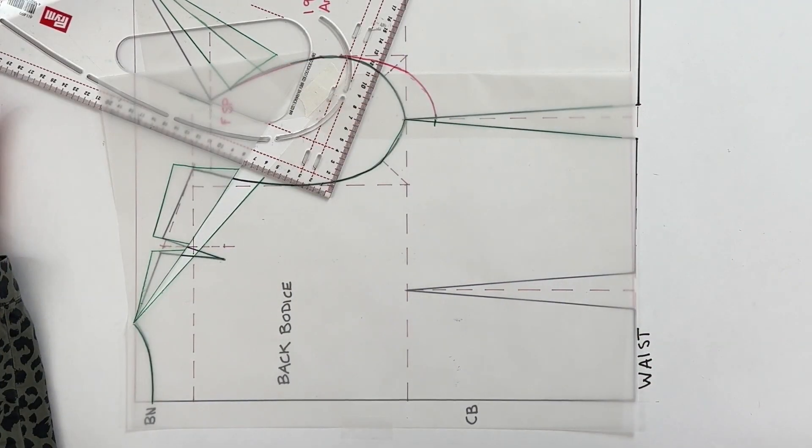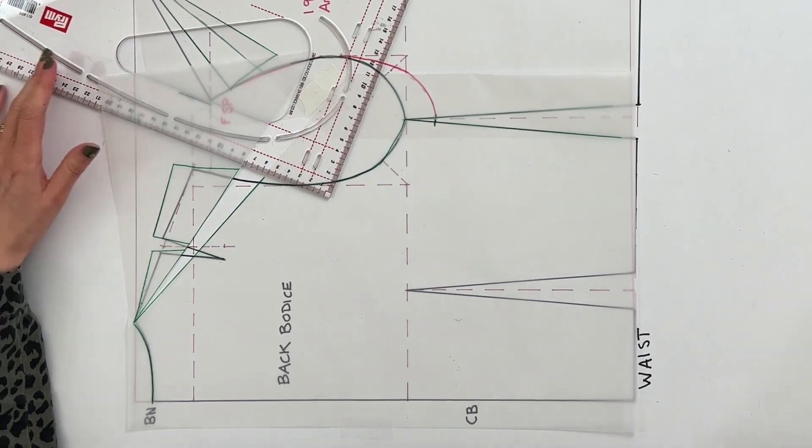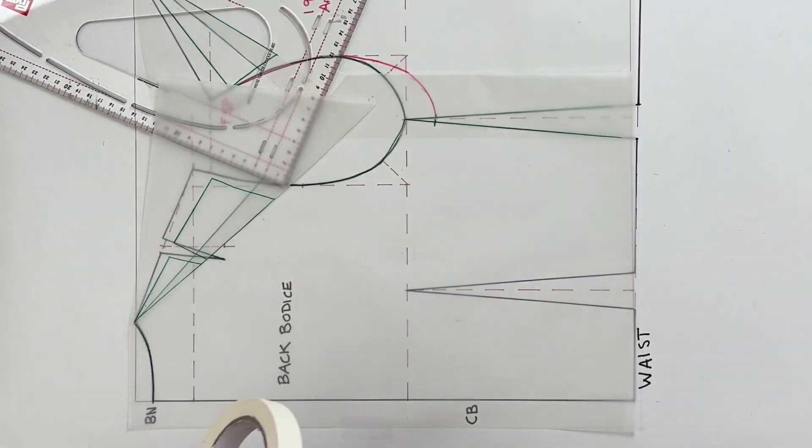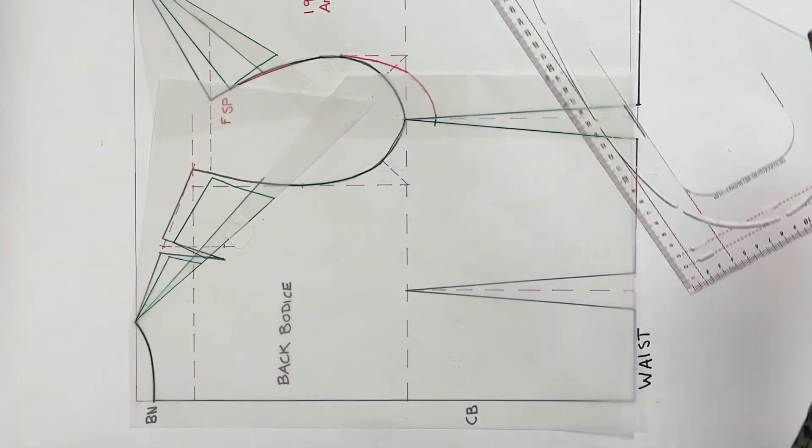Again you will have marked out on your block how much you need to reduce the slope of your shoulders by. For me I'm just going to assume once again that it's two centimeter reduction. That brings me down to my two centimeter mark.